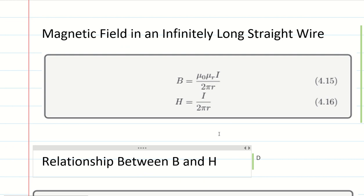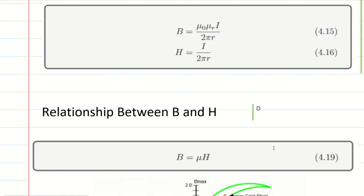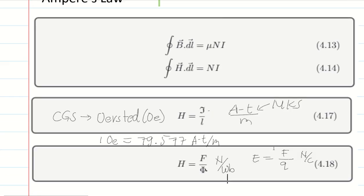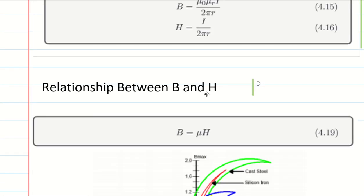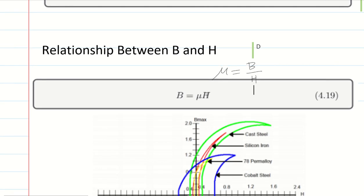The relationship between B and H: if you remove mu from the first formula, you have H. So permeability mu is just equal to the ratio of B over H — that is, magnetic flux density divided by magnetic field intensity.